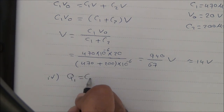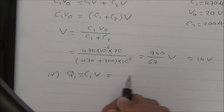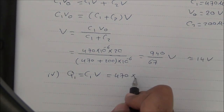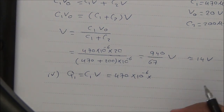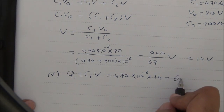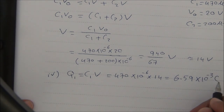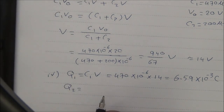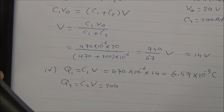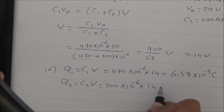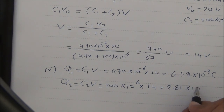The fourth part of B: calculate the charge stored on one plate of each capacitor after connection. Q1 = C1 × V = 470 × 10⁻⁶ × 14 ≈ 6.59 × 10⁻³ C. Q2 = C2 × V = 200 × 10⁻⁶ × 14 ≈ 2.81 × 10⁻³ C.